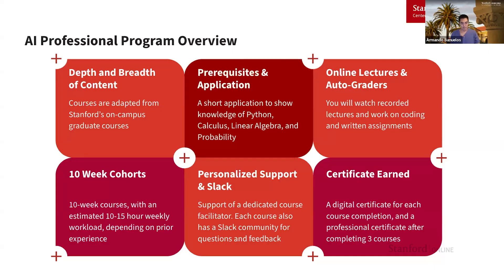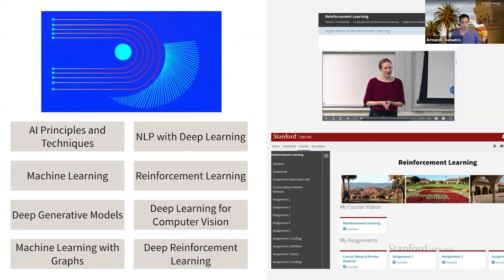Courses are pass/no pass, so at the end of the course you'll have to reach a minimum number of points required to receive a digital certificate for course completion. Once you've successfully completed three courses, you'll receive the professional certificate. We have eight different offerings and are continuously exploring new additions based on demand. The content is derived from graduate course content taught by Stanford faculty, so the rigor remains the same. We regularly talk with faculty to update after each iteration, and our courses center around various different branches of AI, ranging from theoretical to practical, grouped by different specializations.